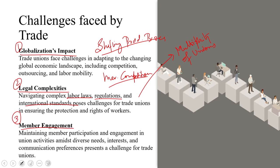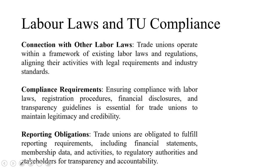Another important factor is changing work demographics. The rise of younger generations with different work expectations and a more individualistic approach to careers might pose typical challenges in mobilizing them into unions. There is also limited reach in the informal sector, where a significant portion of the workforce is employed — organizing unions and enforcing labour rights becomes very challenging. Advancements in technology, automation and other technological changes might lead to job displacement in certain sectors, requiring unions to adapt to these changes as a critical challenge.